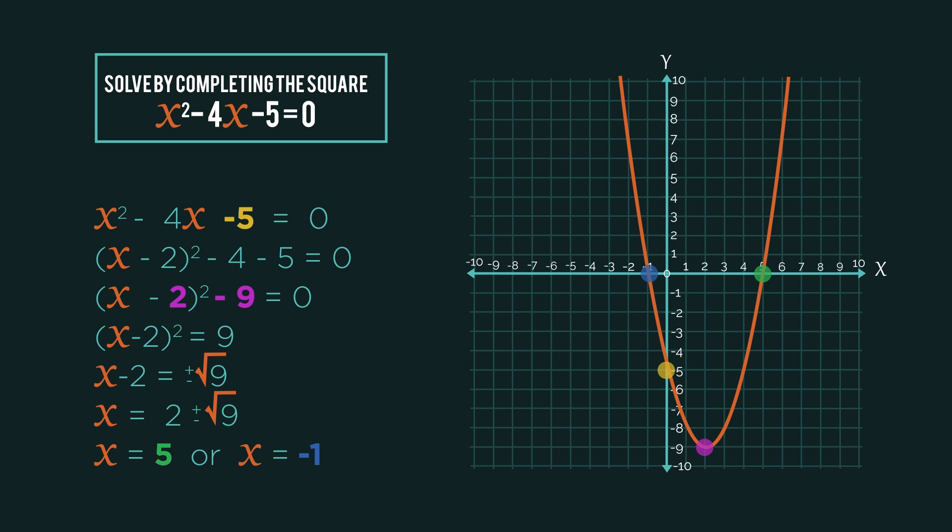Hopefully you can see that the negative five is where the curve crosses the y-axis. This is the same for all quadratics, nothing special about completing the square. The solutions, so the five and negative one, are where the curve crosses the x-axis. Also nothing new here, this is the same whichever way you use to solve the quadratic.